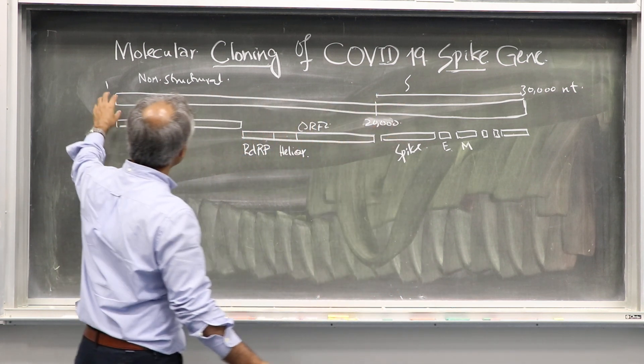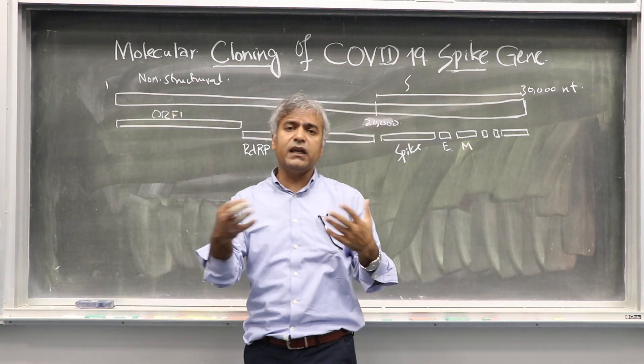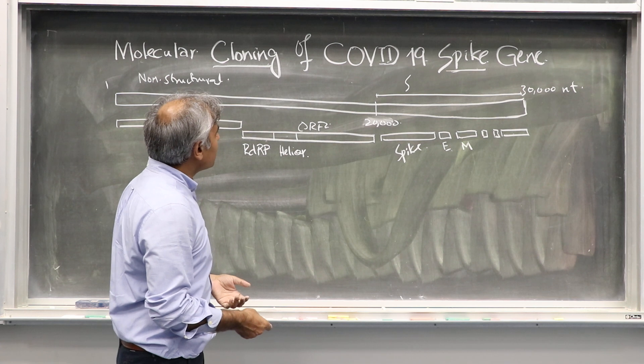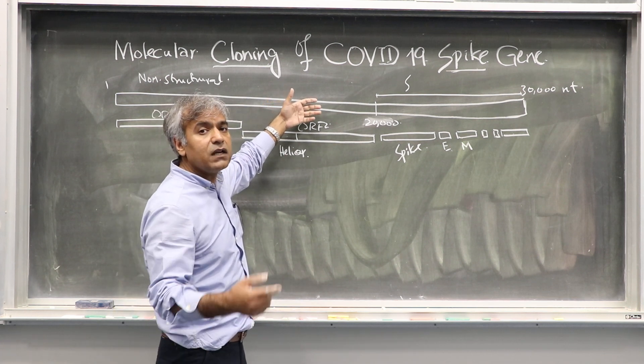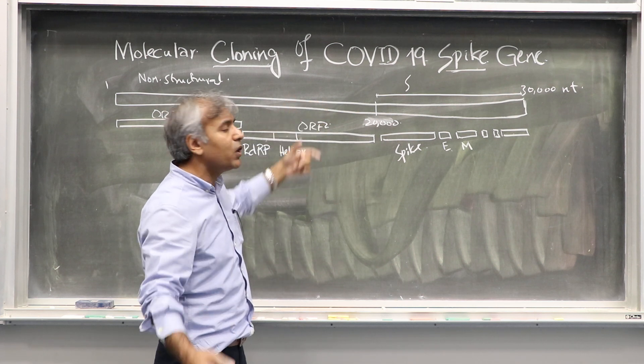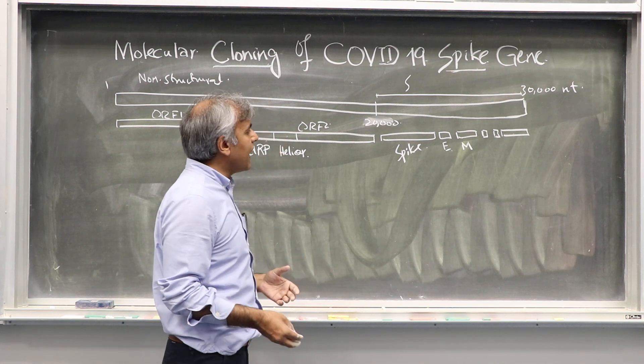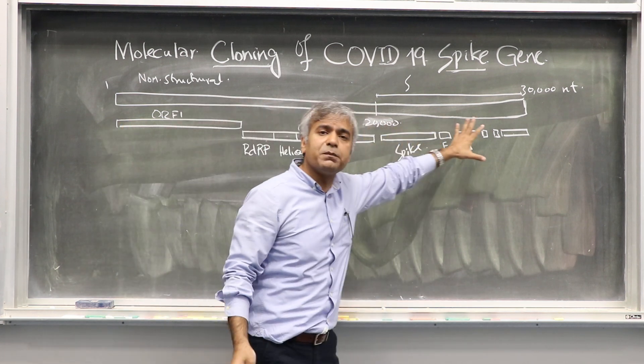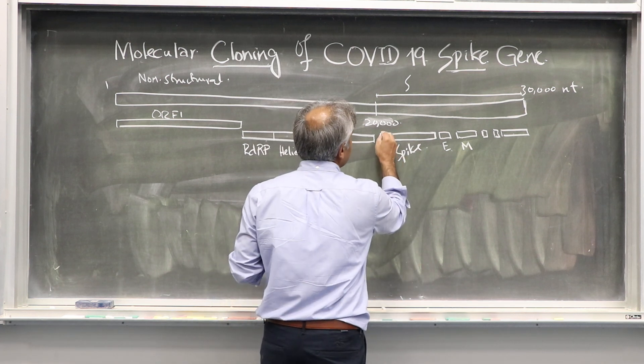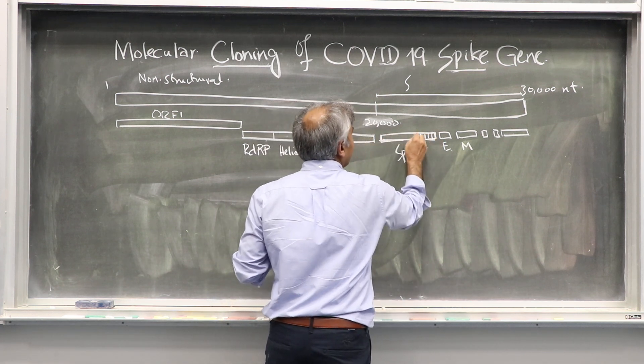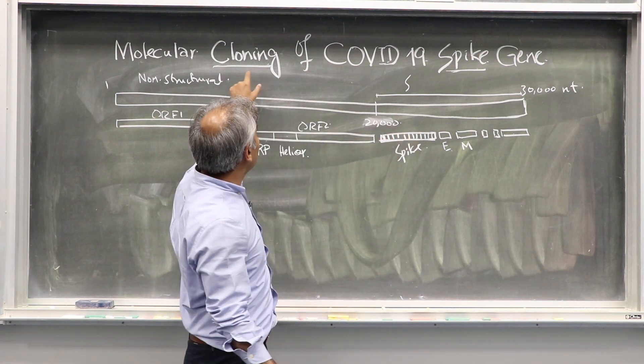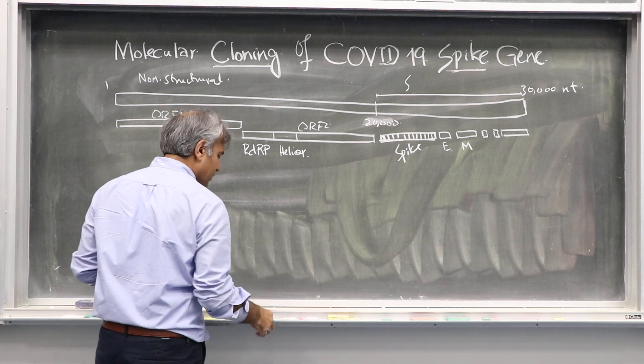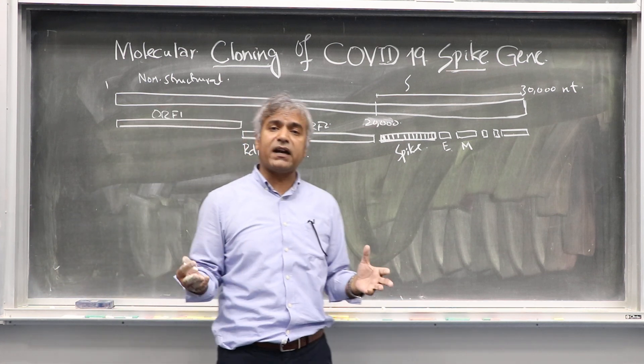Now, since it's an RNA virus, it exists in the form of RNA in living cells. We have to use RNA and convert it first into DNA before we think of cloning. We have now identified the complete genome sequence of the virus, all 30,000 nucleotides, and the detailed sequence of spike as well. We want to clone and express, which means we want to produce protein.